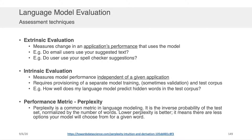Intrinsic evaluation, which is far more common when writing scientific papers, is where you measure your model's performance independent of the application area. You do this by provisioning a model training set, validation set, and test set — we'll be speaking about how to train and validate models in a subsequent lecture. The performance metric for intrinsic evaluation is called perplexity. It's very common in the language model literature. It's the inverse probability of the test set normalized by the number of words. Lower perplexity is better because it means there are fewer options your model has to choose from for a given word.